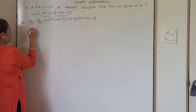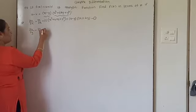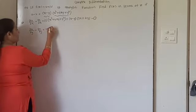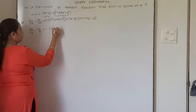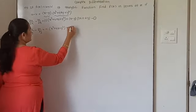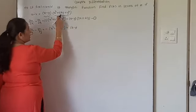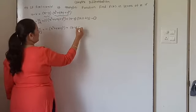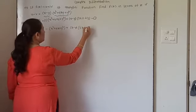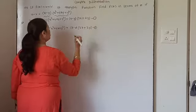Similarly, if I find its derivative with respect to y, you will get ∂u/∂y minus ∂v/∂y equal to minus (x squared plus 4xy plus y squared) plus (x minus y) as it is, and now the derivative of this with respect to y is 4x plus 2y. This is equation number 2.